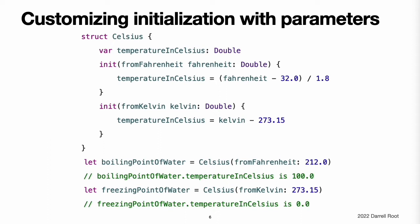Initialization parameters have the same capabilities and syntax as function and method parameters. This example defines a structure called Celsius, which stores temperatures expressed in degrees Celsius. The Celsius structure implements two custom initializers, init(fromFahrenheit:) and init(fromKelvin:), which initialize a new instance of the structure with a value from a different temperature scale. Both initializers convert their single argument into the corresponding Celsius value and store this value in a property called temperature.